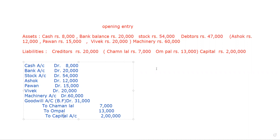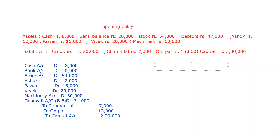The next entry is related to bad debts. Sometimes it happens that a debtor is not able to pay the full amount. If the debtor pays the full amount, that's fine — the entry will be cash account debit to debtor account for whoever has paid. But sometimes the debtor is not able to pay us the full amount.